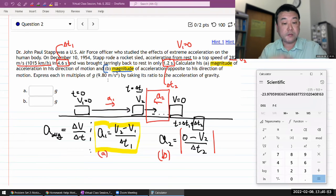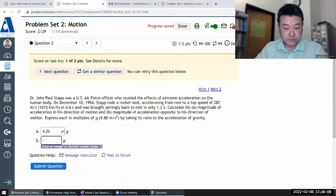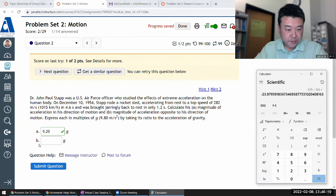Divided by g to get how many multiples of g this is. So divide by 9.8 meter per second squared. And this is where again, remember magnitude, so no minus sign, just take the absolute value. 23.98 g is the decelerating acceleration. 23.9.